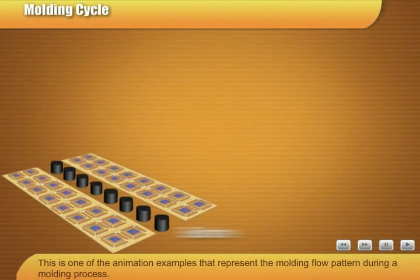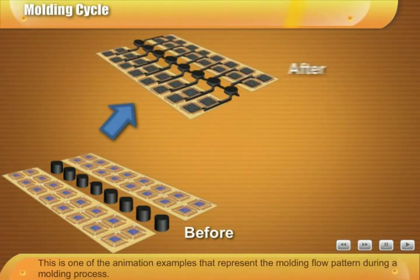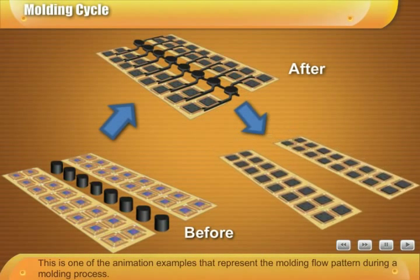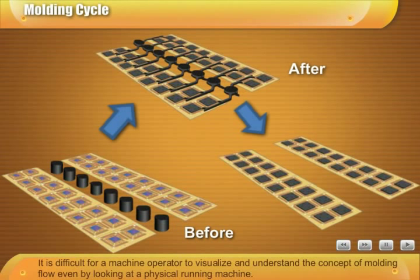This is one of the animation examples that represent the molding flow pattern during a molding process. It is difficult for a machine operator to visualize and understand the concept of molding flow, even by looking at a physical running machine.